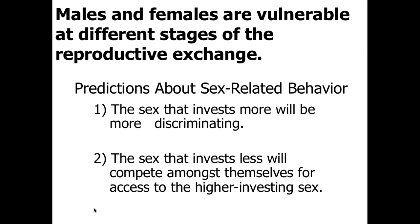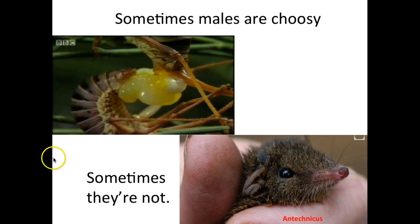Sometimes males are choosy. In the case of the cricket, the male will often ejaculate almost half of its body mass during one mating session and frequently dies afterward. So it's extremely important that he gets a good female because he won't have another chance. Whereas with the Antechinus — a little mouse-like marsupial from Australia — males tend to not be choosy at all. Instead, they have as many mates as they can in fairly rapid succession, so having mates is more important than having the best mates.